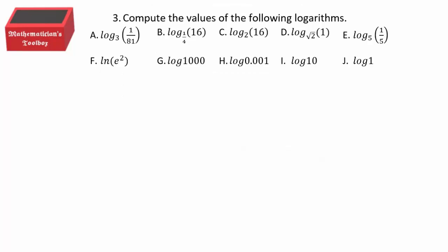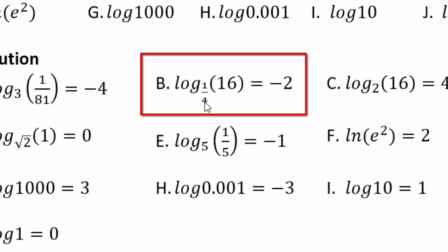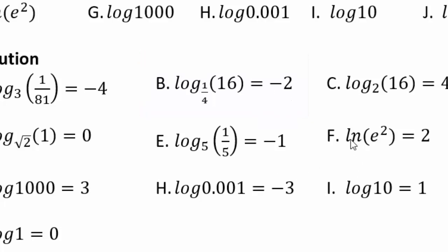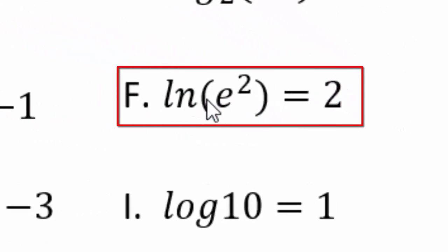Go ahead and compute these logarithm values. For part b: (1/4)² = 1/16, but you want 1/16, so the exponent must be −2 to get the reciprocal. For part f: natural log means base e, so e² = e², which is why the answer is 2.